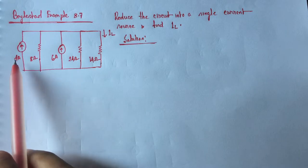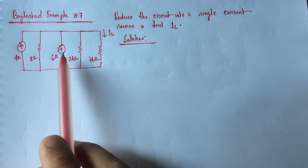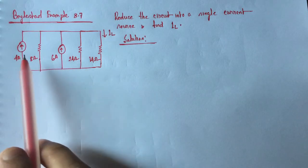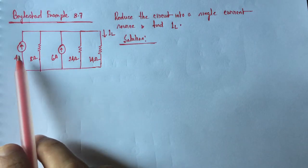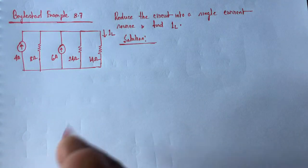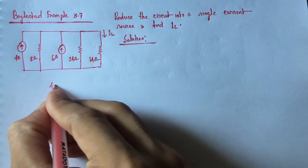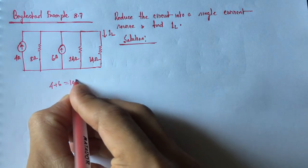We see that 4 ampere current and 6 ampere current is flowing upward. So since the direction of these two current sources are same, these two currents will be added simply, that is 4 ampere plus 6 ampere, 10 ampere.